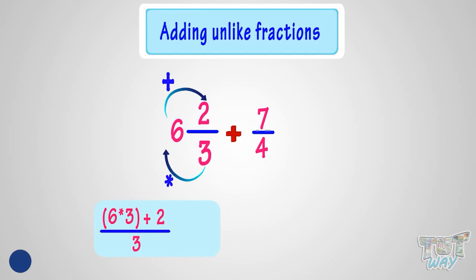So multiply 6 by 3 is 18. We have converted the mixed fraction to an improper fraction. Now we have two unlike fractions to add. We have to add 20 by 3 and 7 by 4.